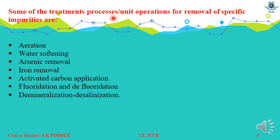Some treatment processes are in operation for removal of specific impurities. For example, if you want to incorporate air, you can use aeration. In such way, there are water softening, arsenic removal, iron removal, activated carbon application, fluoridation and defluoridation, demineralization, and desalination. All these are for special treatment purposes.